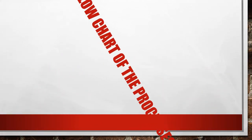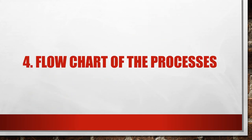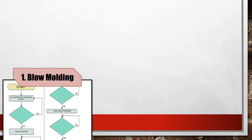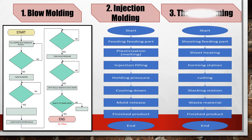Chapter 4: Flow chart of the processes. The flow charts of the three non-metallic processes for producing the PVC packaging product are shown.